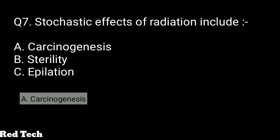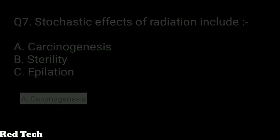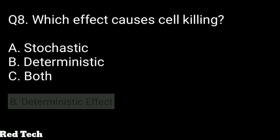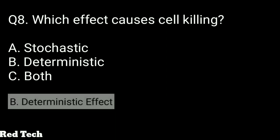Question number eight: which effect causes cell killing? Options: stochastic, deterministic, or both. The right answer is deterministic effect — cell killing occurs due to the deterministic effect. This should be clearly understood.